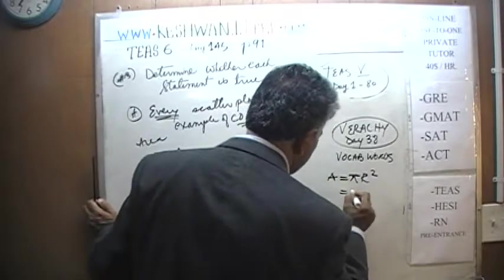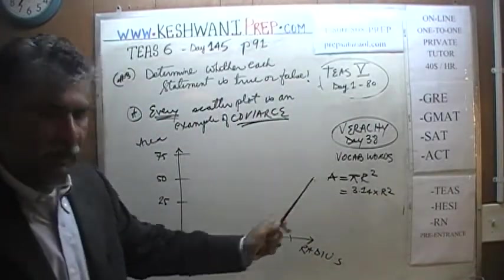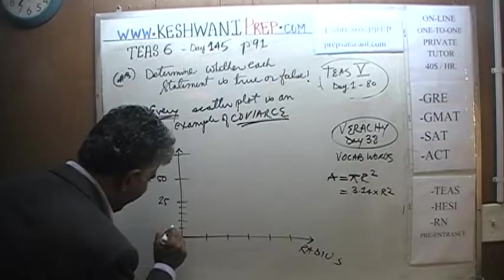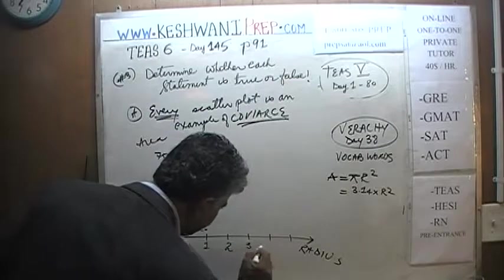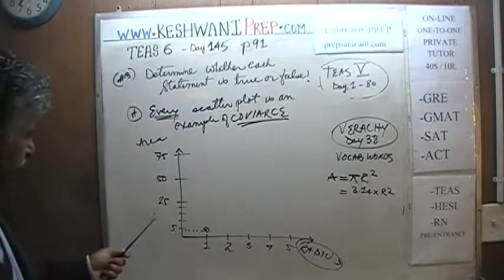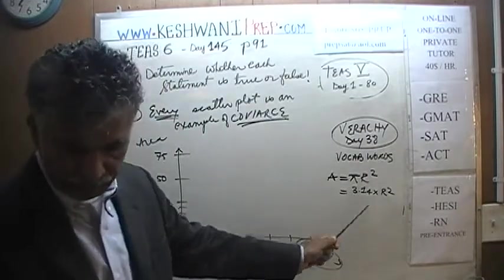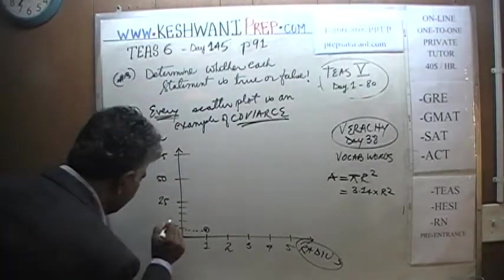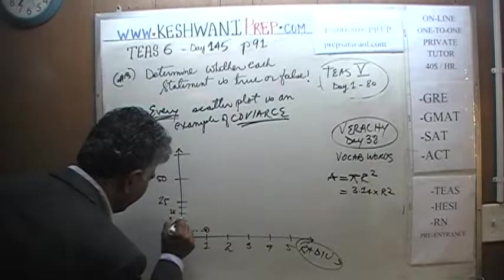When the radius is 1, the area is 3.14 — that's way down near the bottom. When the radius is 2, 2 squared is 4, times 3.14 is about 12.56, so roughly 12, somewhere between 10 and 15 on the y-axis. When the radius is 3, it's 3.14 times 9 — 3 nines are 27, so it's around 28, plotted near the 25–30 range.